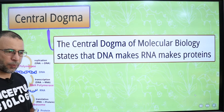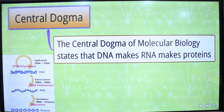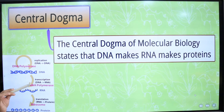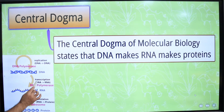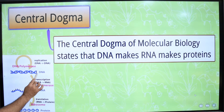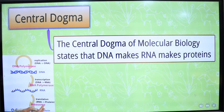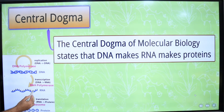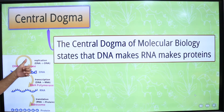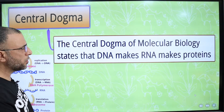The central dogma describes the flow of genetic information: from DNA to DNA, which is called replication, occurring in the nucleus; from DNA to mRNA, which is called transcription, also occurring in the nucleus; and then the mRNA moves from the nucleus to the cytoplasm through nuclear pores, where ribosomes attach to it and synthesize protein. This synthesis of protein from mRNA is called translation. Replication, transcription, and translation are collectively known as the central dogma.